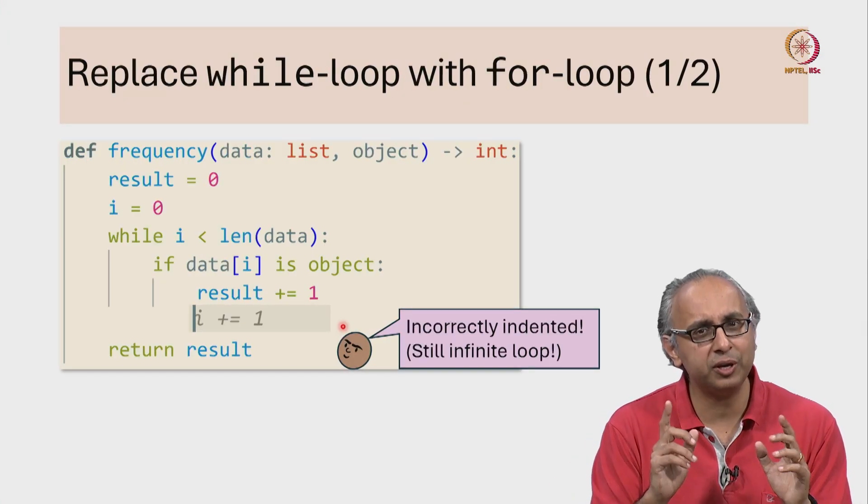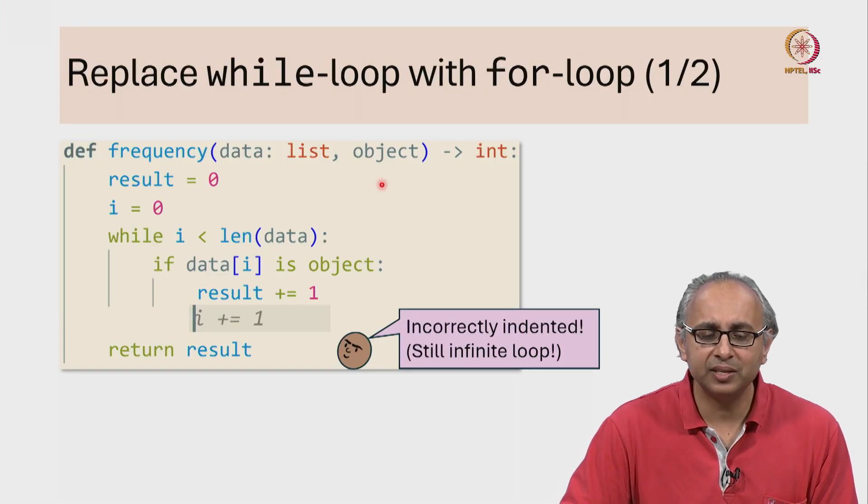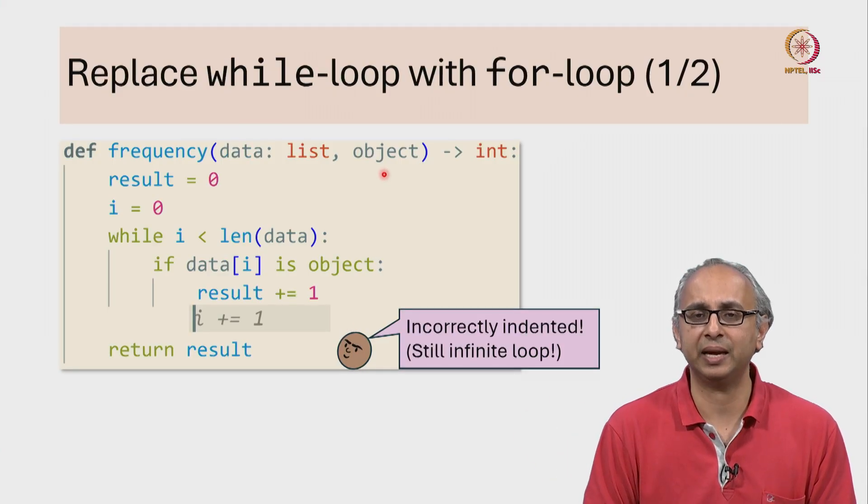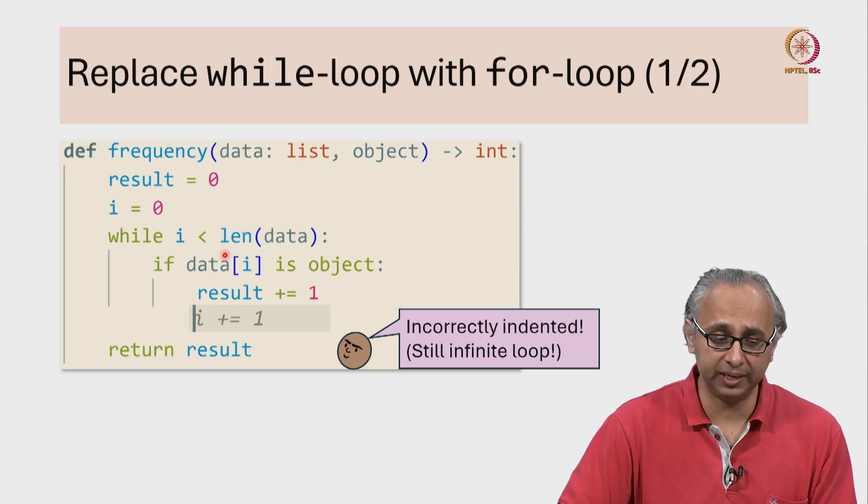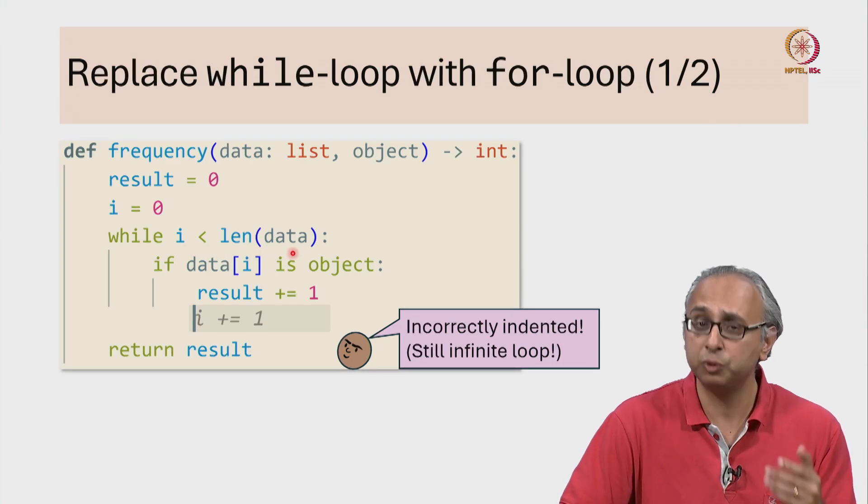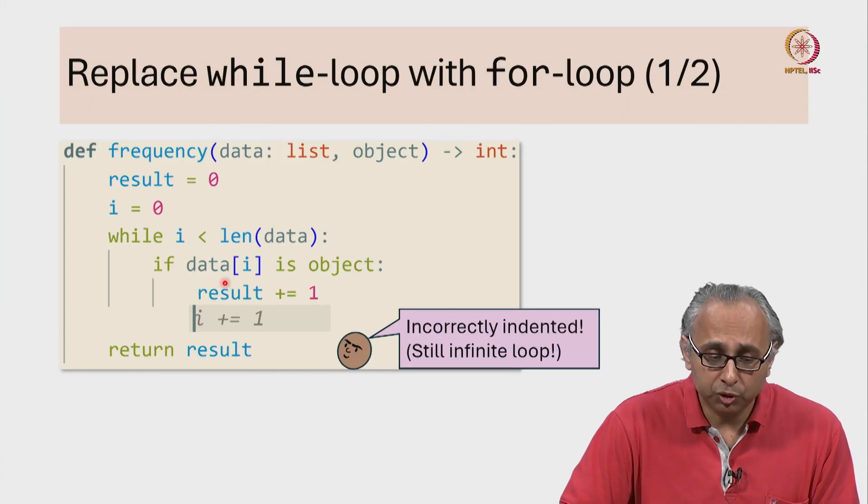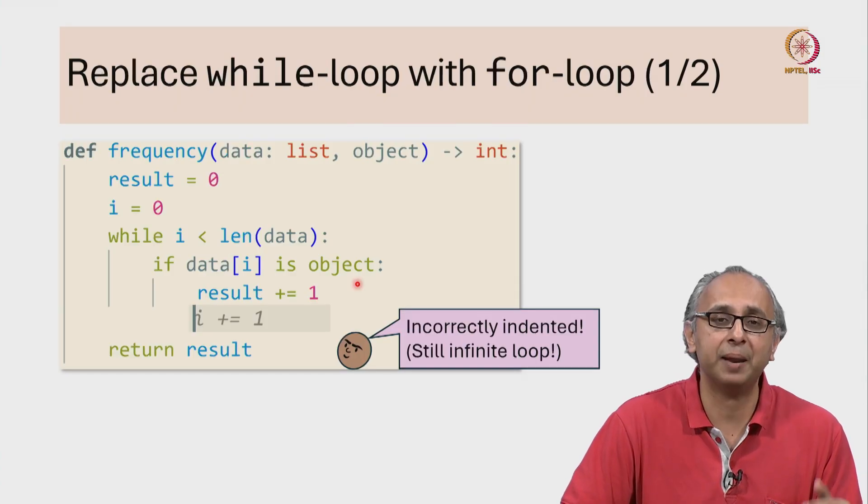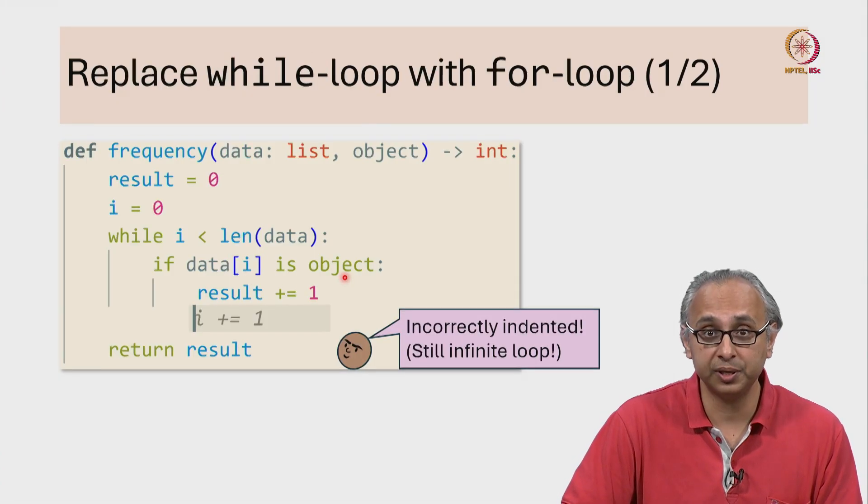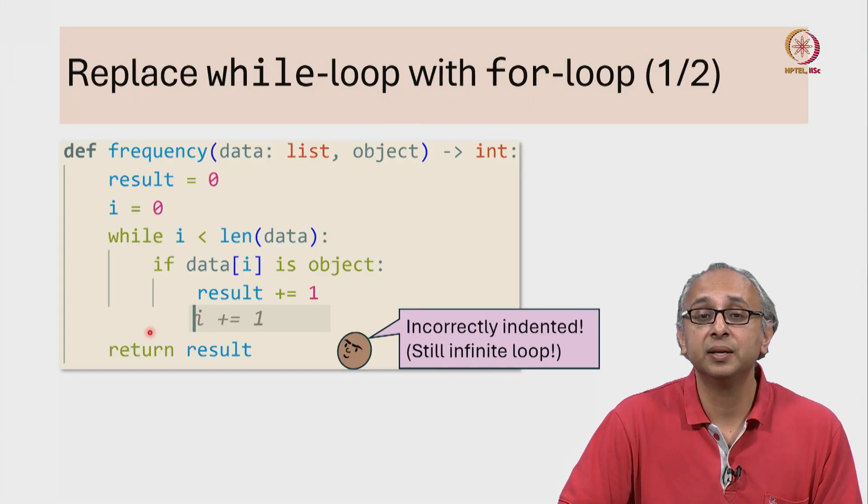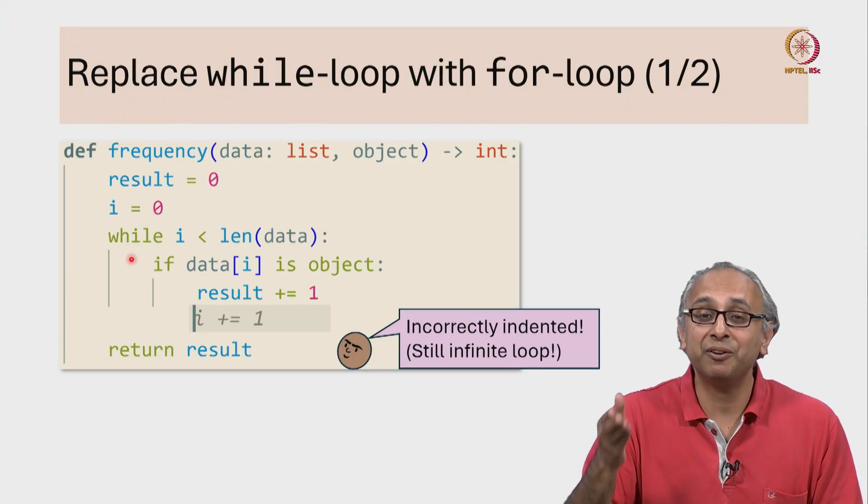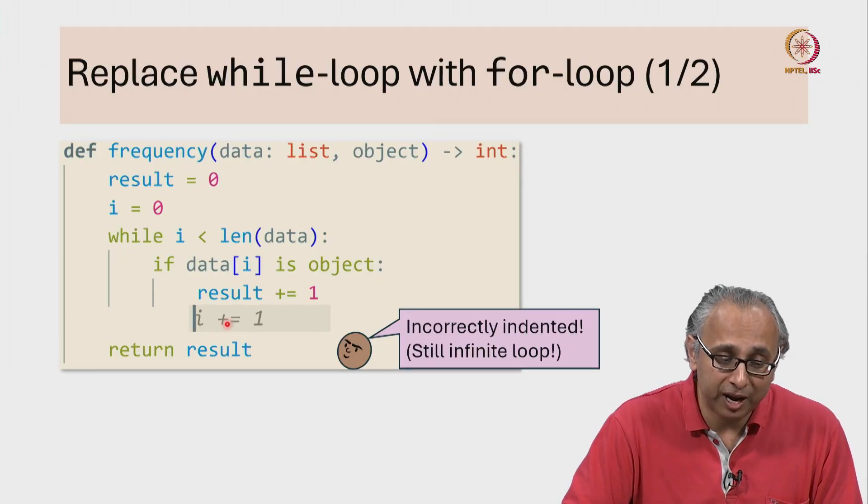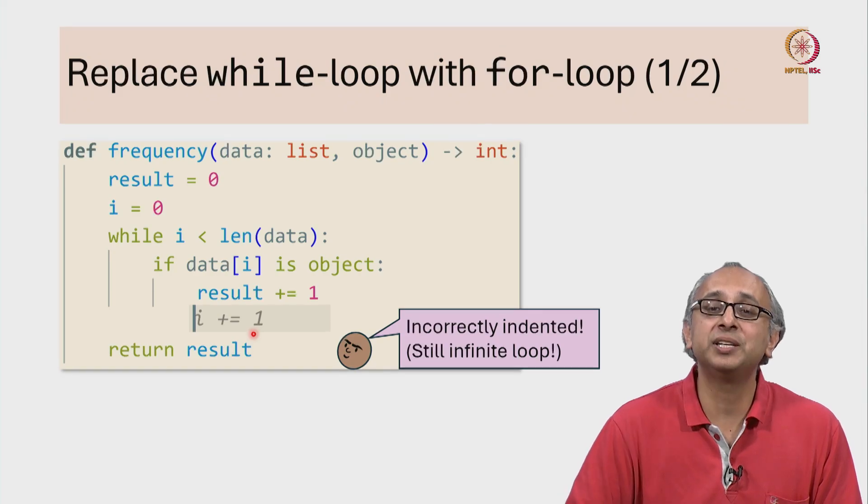Well, imagine we have a non-empty list and let's say this object does not appear in that list. We would initialize result to 0, we would initialize i to 0, and since this is a non-empty list, this condition 0 less than length of the list will be true. We would come in here, we would check if data[0] is object and based on what we have assumed, that condition would be false. So we would skip past this, and there are no more statements in the body of this while loop. So we would jump back to the top and again, we have not updated the value of i. The value of i is inside this if condition. So it is badly indented and that is what our friend is pointing out.